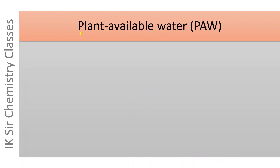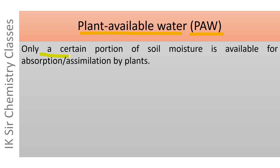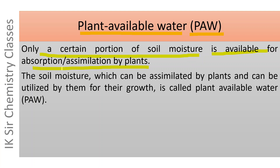Let us now explain the term plant-available water, abbreviated as PAW. Only a certain portion of soil moisture is available for absorption, that is assimilation, by plants. The soil moisture which can be assimilated by plants and utilized by them for their growth is called plant-available water, abbreviated as PAW.